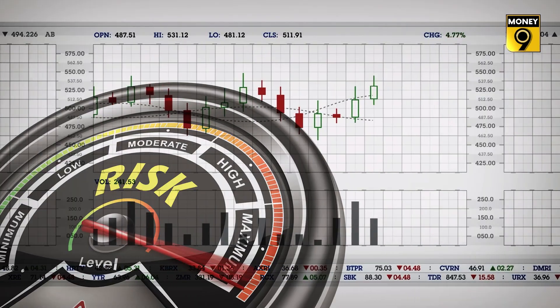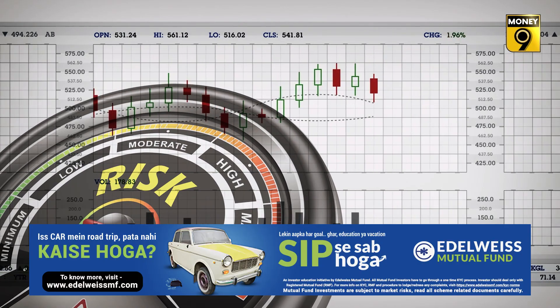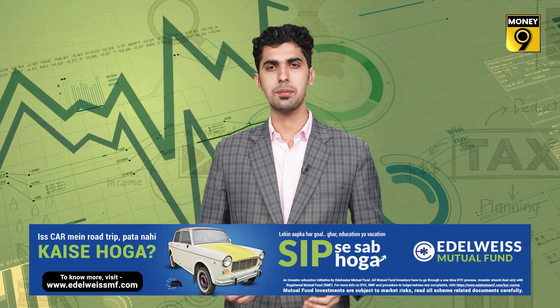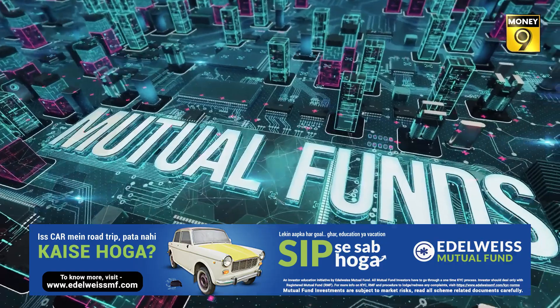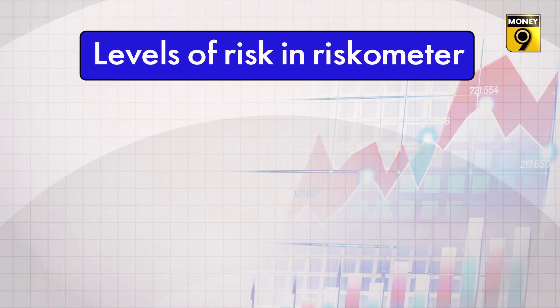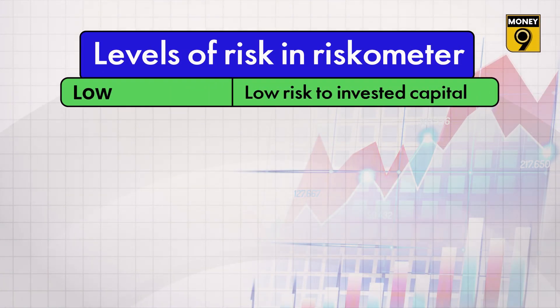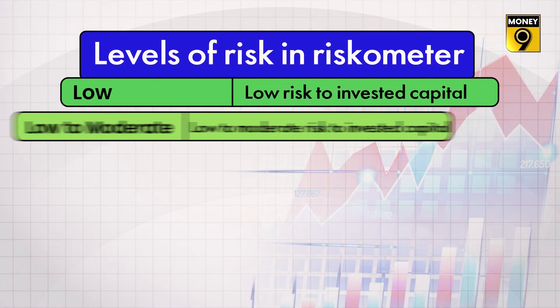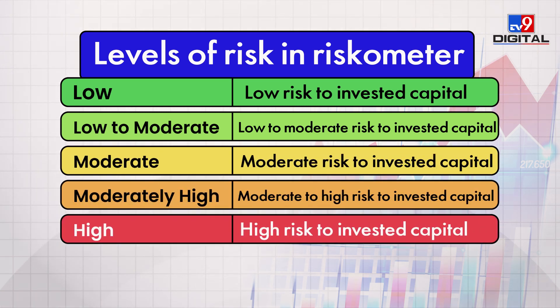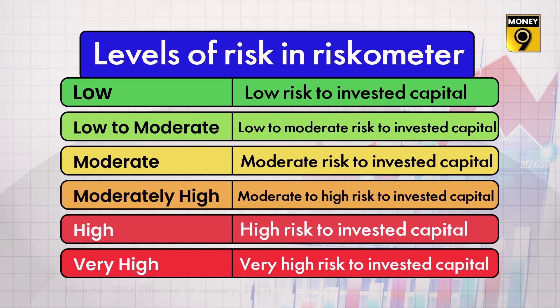There are six levels of risk in the riskometer, starting from low and going up to extremely high. In accordance with SEBI's guidelines effective from January 1, 2021, every mutual fund scheme is allotted a risk level. The categories designated by SEBI are: low risk, low to moderate risk, moderate risk, moderate to high risk, high risk, and very high risk.